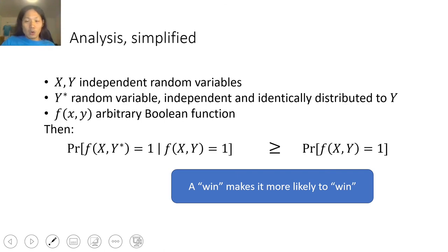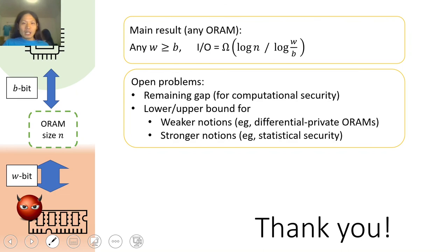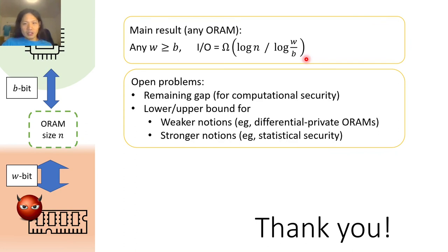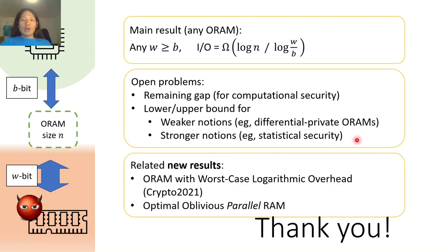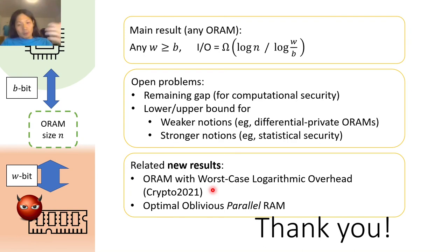I hope this inequality in conditional probability will be useful in future research. We improved our lower bound, and our technique extends to other settings such as multi-server ORAM. There are still open problems, for example the lower or upper bound for weaker or stronger notions of ORAM. We also constructed an optimal ORAM that runs in worst-case time, also published at the crypto conference this year. Thank you for your attention — if you find this result interesting, please read our full paper or send us an email.